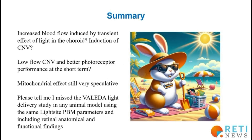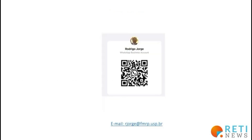Some of my hypotheses: is the light temporarily increasing blood flow in the choroid and improving photoreceptor performance? Is this light contributing to the induction of choroidal neovascularization? Could it be a low-flow choroidal neovascularization that, as happens in some cases of type 1 membrane, improves photoreceptor performance for some time? The effects on the mitochondrion are still very speculative. Probably the rabbit is still on vacation and has hidden the mitochondrion. Finally, I would like to know if I missed any study using the Valeta system in animals with the same parameters as LightSite 3 — any studies showing anatomical or functional changes. If you find such a study, please send a message via WhatsApp or email. Thank you very much.